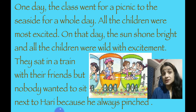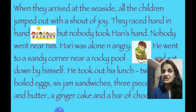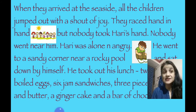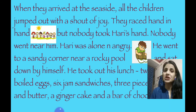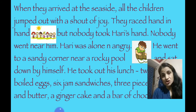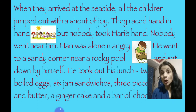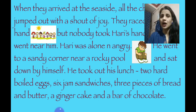Harry was sitting alone because he had no friend — nobody wanted to sit next to him because he always teased them. When the children arrived at the seaside, they all jumped out of the train with a shout of joy. They were holding each other's hands and running, but nobody was holding Harry's hand, nobody was talking to him, nobody was sharing things with him. Harry was alone and feeling angry. He went to a sandy corner near a rocky pool and sat there alone.